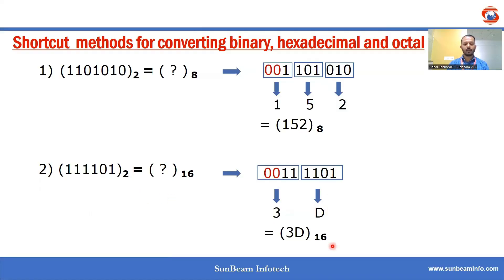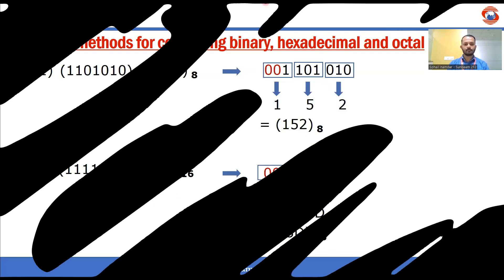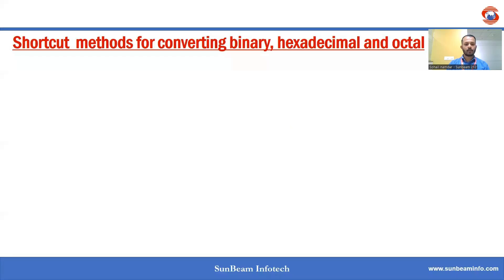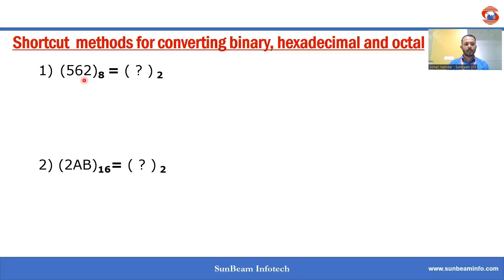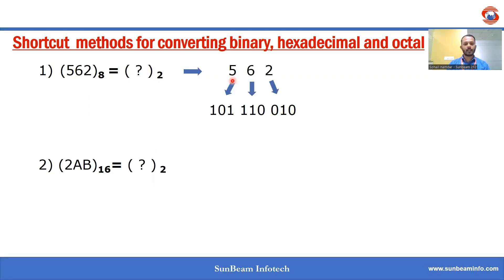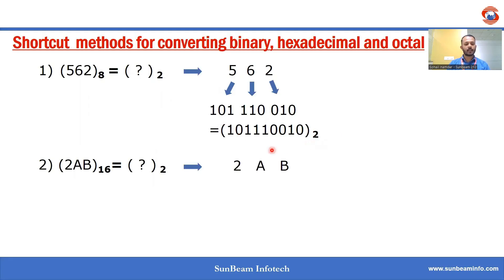Now we need to convert octal to binary and hexadecimal to binary. For converting octal to binary, we write each octal digit in its respective binary using three bits. So 5 is 101, 1 is 001, 6 is 110, and 2 is 010. That's how we convert octal to binary.